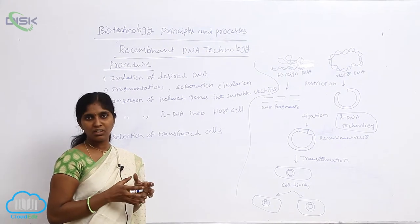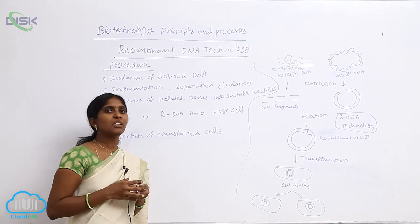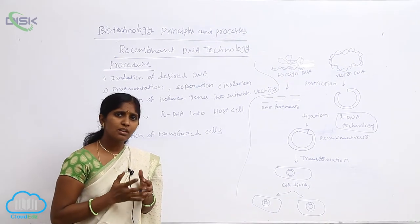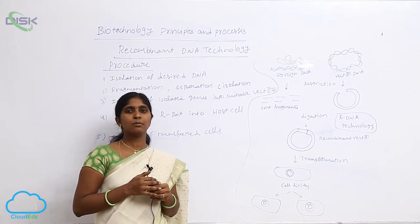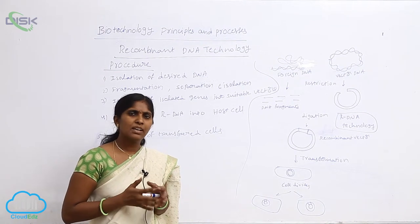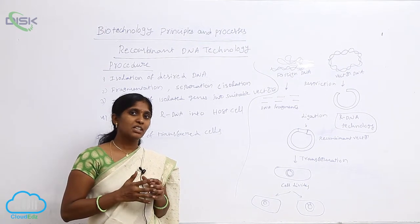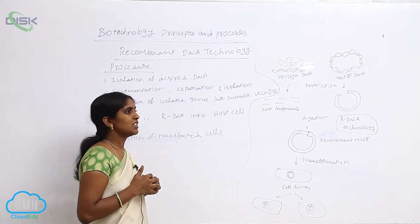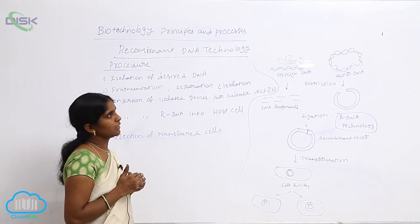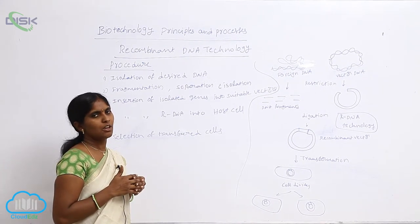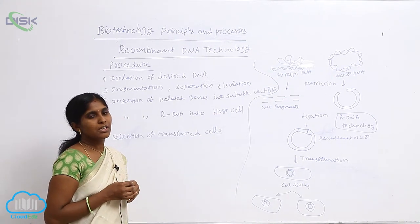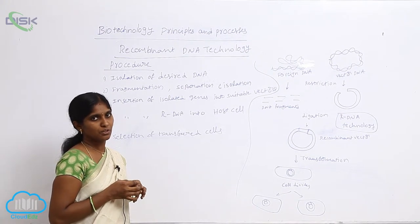Protease enzymes are protein-digestive enzymes that can digest the protein contaminants. RNA contaminants are digested by RNase enzymes. Carbohydrates and other molecules are also removed. Finally, we go for centrifugation. Based on centrifugation — approximately 10,000 rpm for approximately 20 minutes — the DNA settles at the bottom of the centrifuge tube.